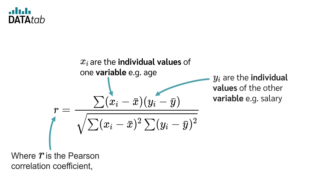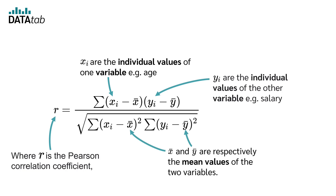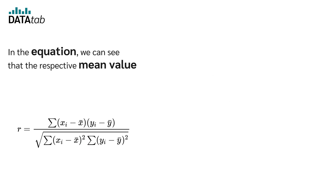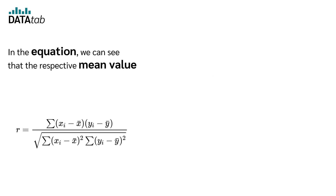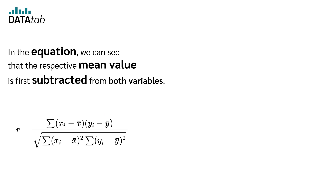For example, age. Yi are the individual values of the other variable, e.g. salary. And x̄ and ȳ are respectively the mean values of the two variables. In the equation we can see that the respective mean value is first subtracted from both variables.